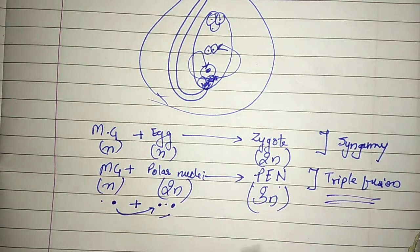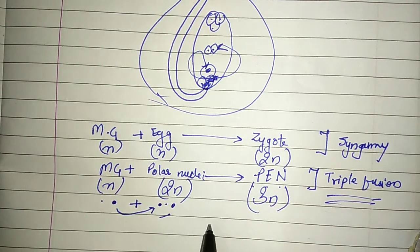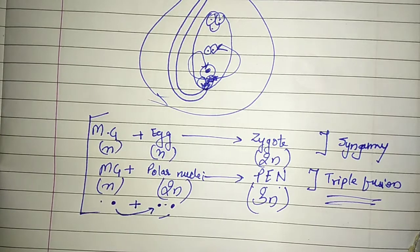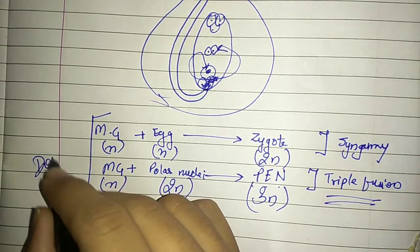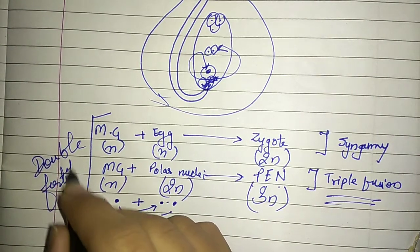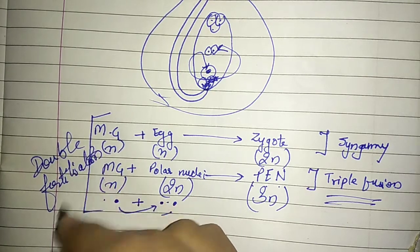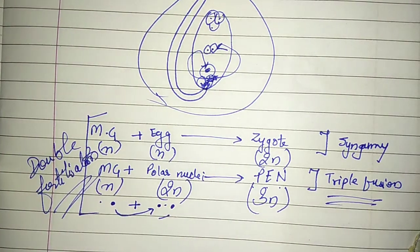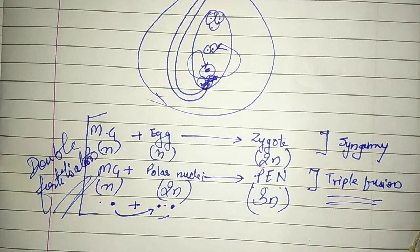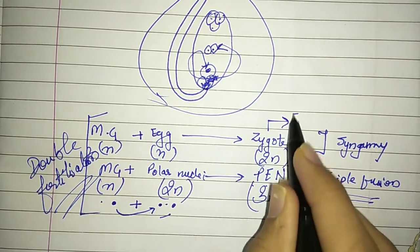Both these processes take place simultaneously, so this is collectively known as double fertilization. This process is called double fertilization. The zygote will further form the embryo. The embryo will form the seed.